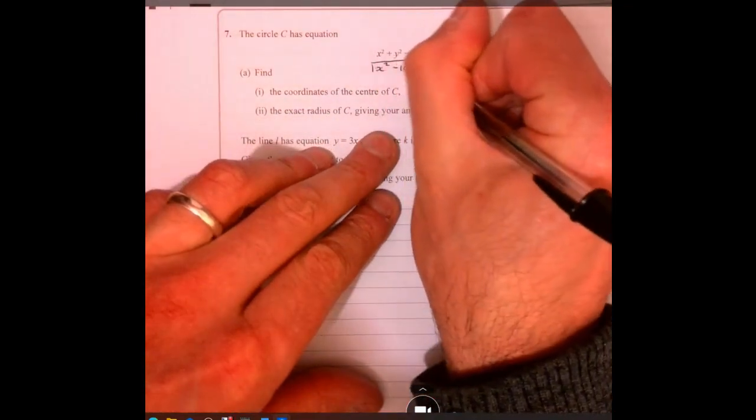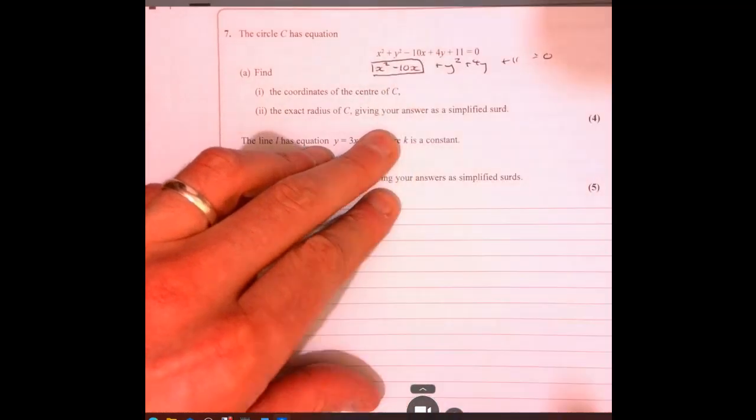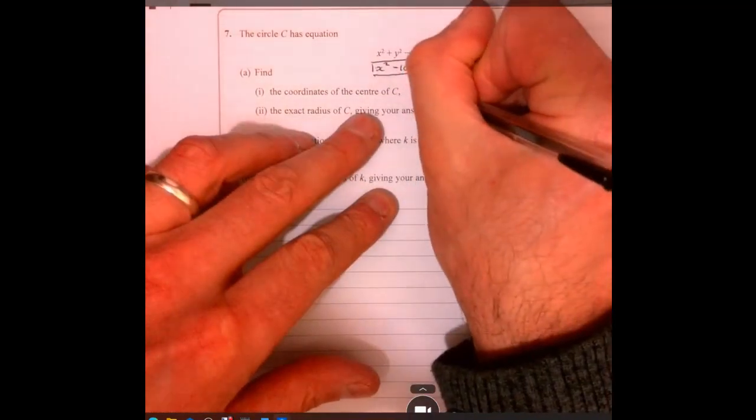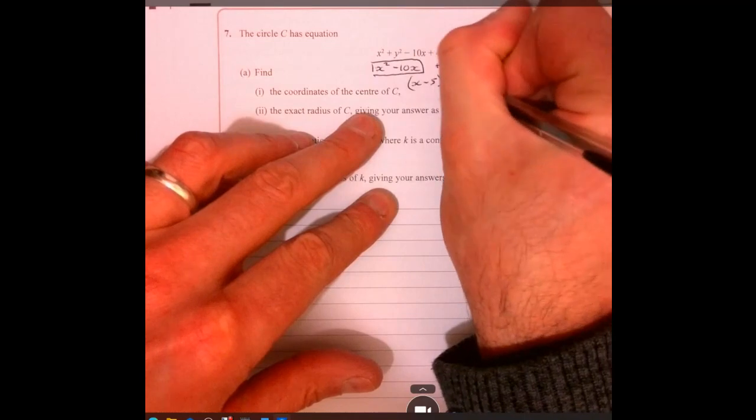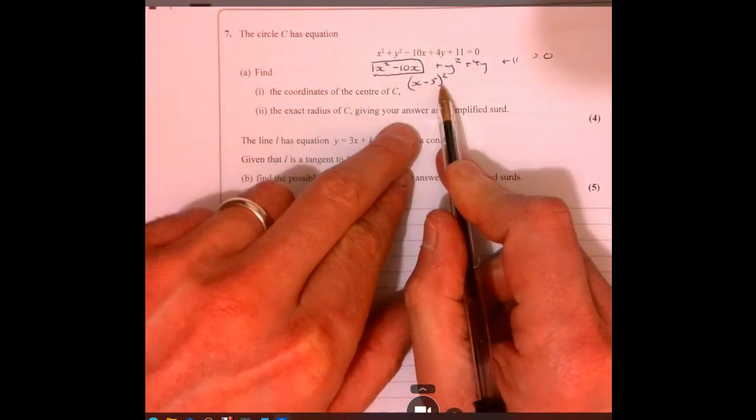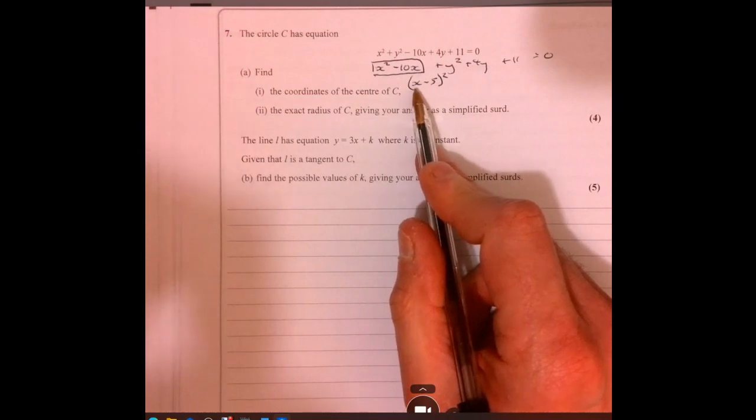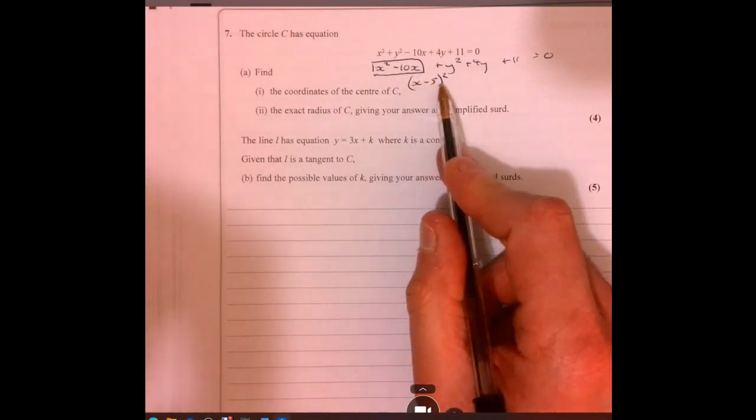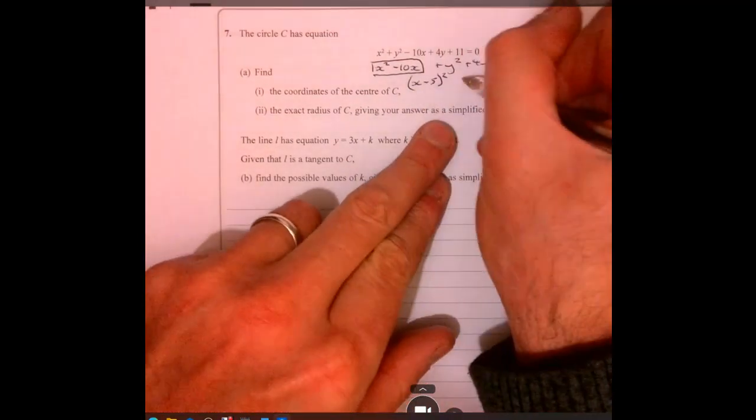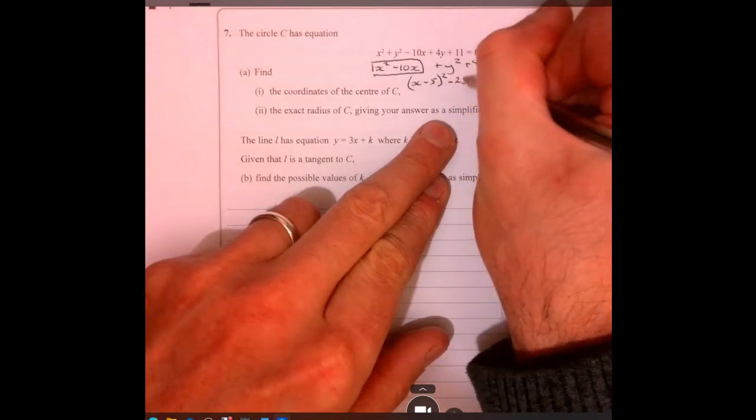So we just need to think, how are we going to get that bit there? Well that's going to give me x minus 5 squared. If you think about x minus 5 squared, it's completely square isn't it? So that's going to give you x squared minus 10x, and it's also going to give you plus 25, so I need to take away 25 because I'm going to give it 25 too much.